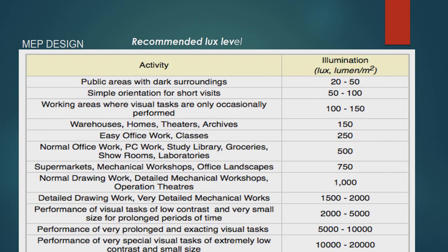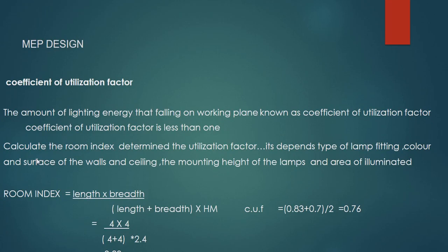What is the coefficient of utilization factor? The amount of lighting energy that is falling on the working plane is known as coefficient of utilization factor. The coefficient of utilization factor value is less than one. Calculate the room index to determine the utilization factor. It depends on lamp fitting, color and surface of the wall and ceiling, and the mounting height of the lamps and area of the illuminated room.